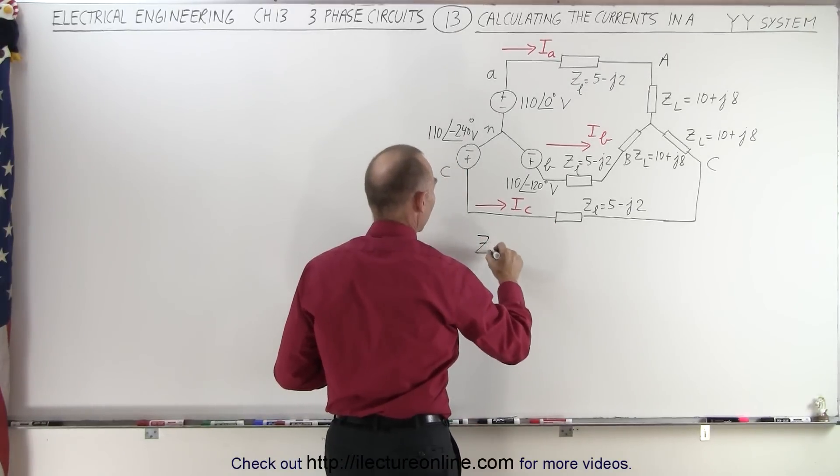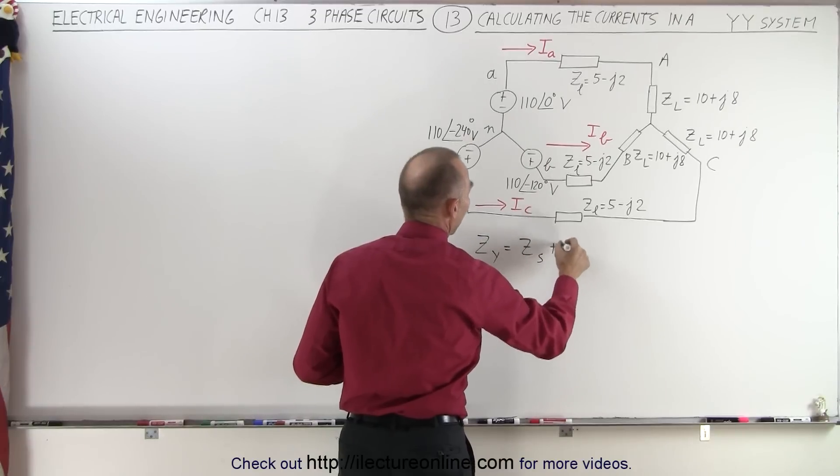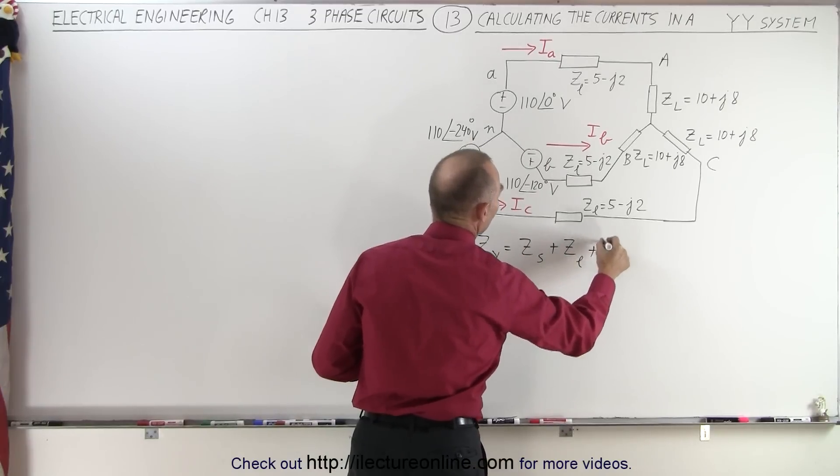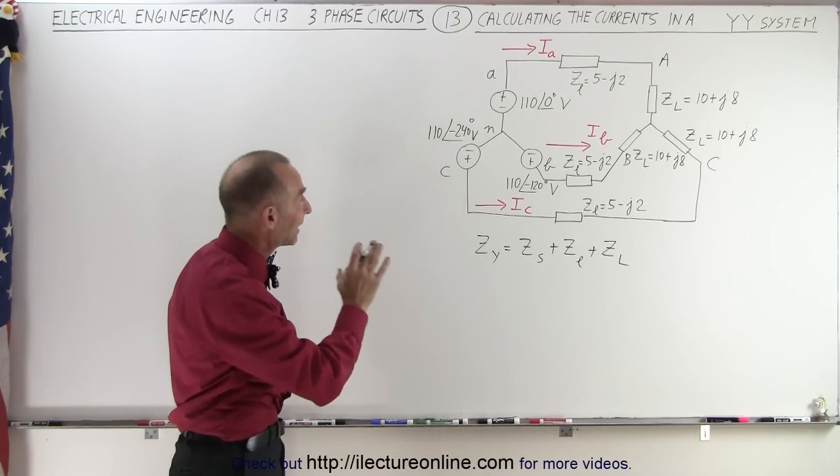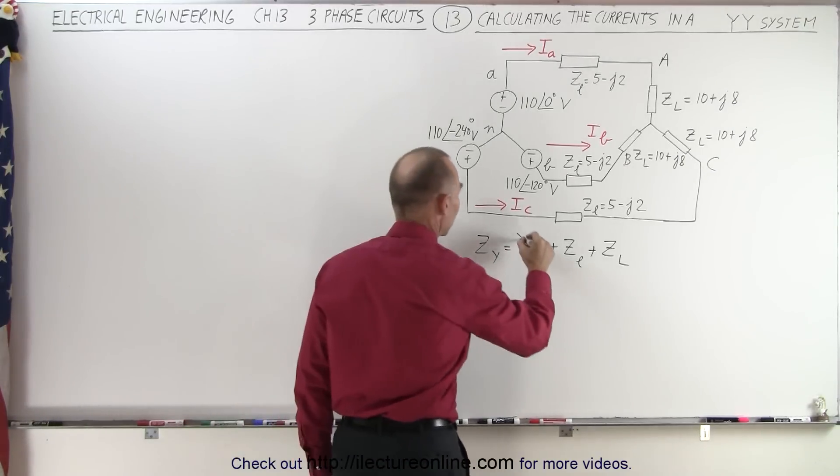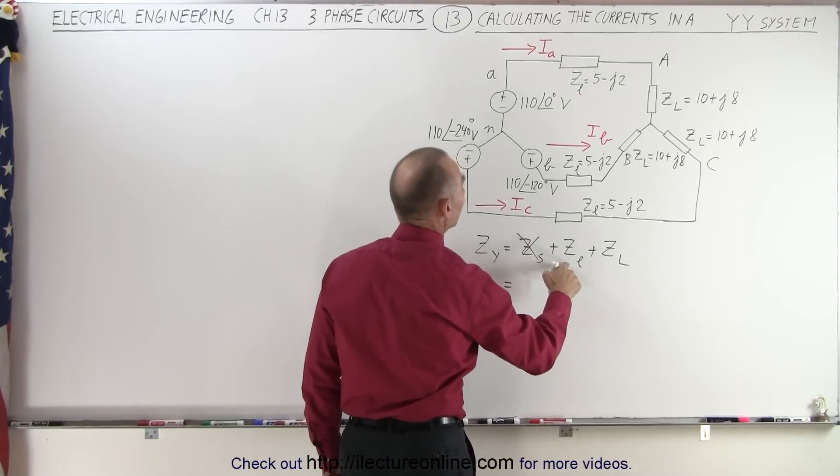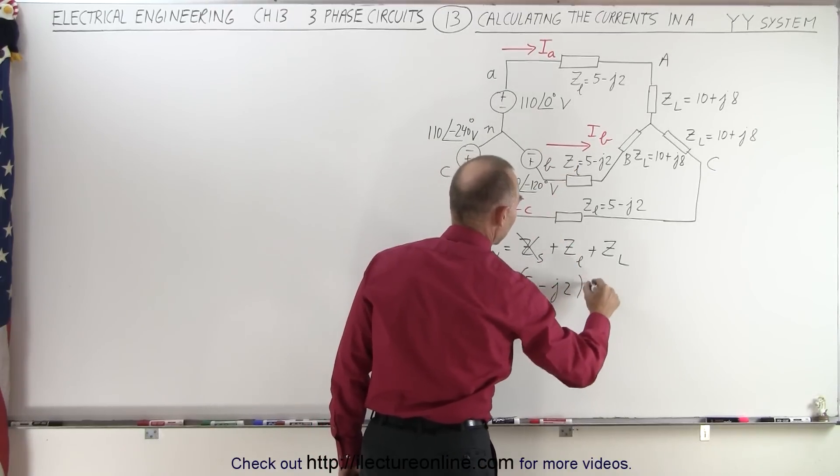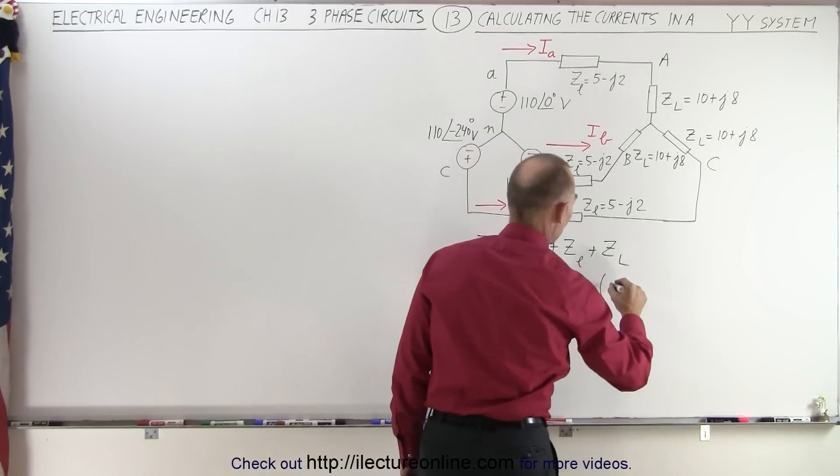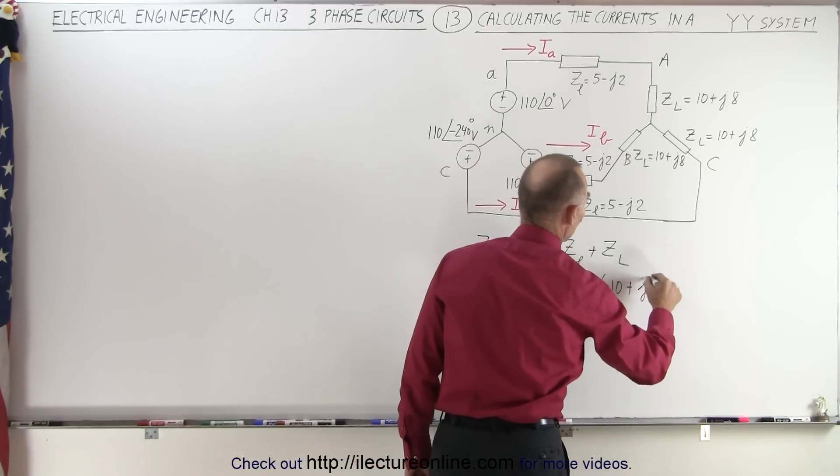So Z sub Y is defined as the source impedance added to the line impedance and added to the load impedance. Although in this case, we were not given the source impedance, so we can get rid of that. And so this becomes equal to the line impedance, which is 5 minus J2. And we're going to add that to the load impedance, which is 10 plus J8.